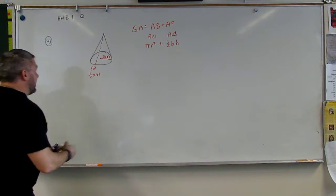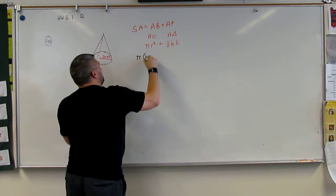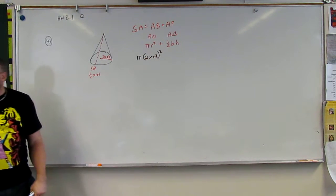And so to do that, I need to go, I have pi times 2x plus 3 squared, because that's our r.